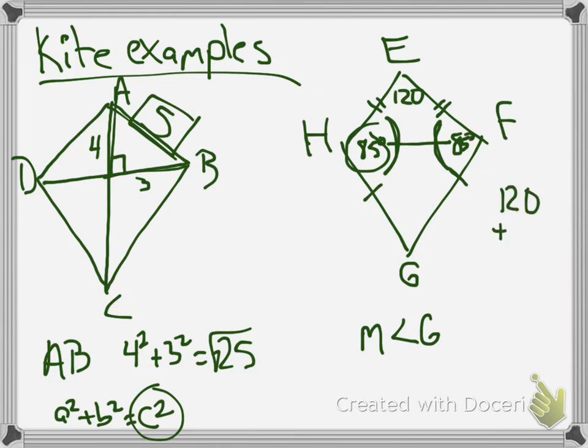So now if I know that, I can add up 120 plus the 85 plus the 85, and then subtract that from 360. Because, again, every time you have four sides, four sides adds up to 360. And then I can find angle H by subtracting from 360 and getting 70.